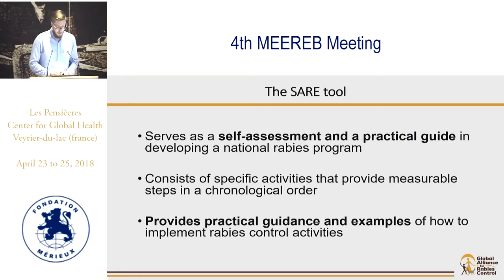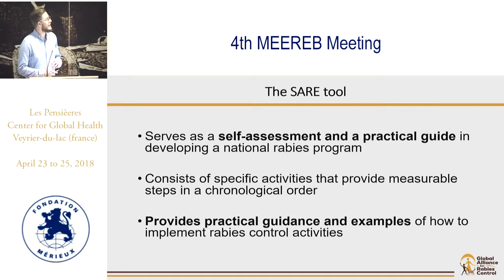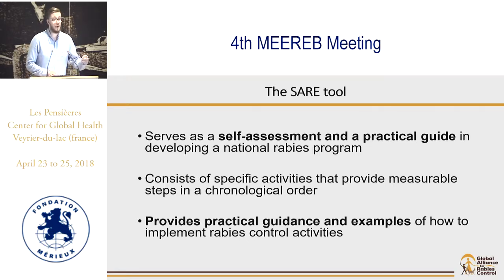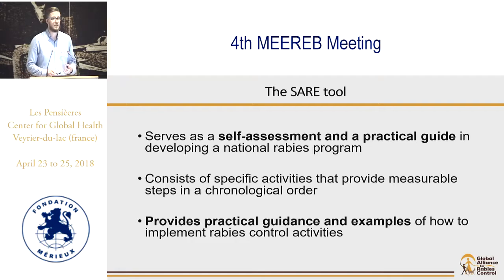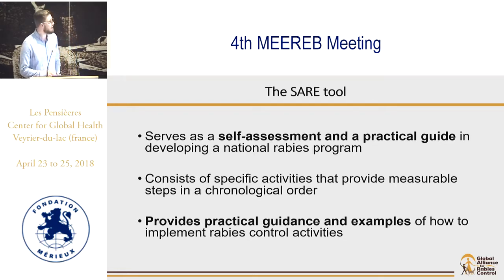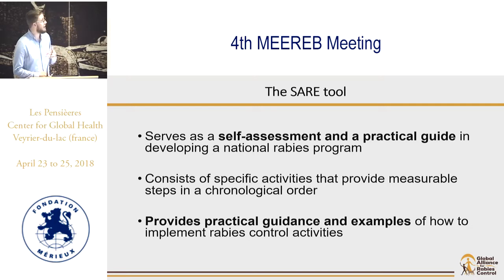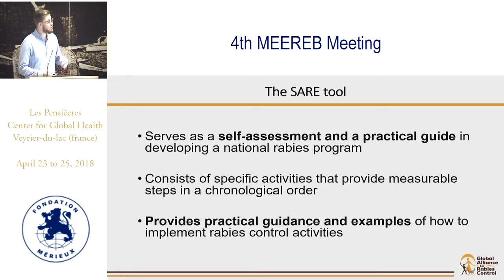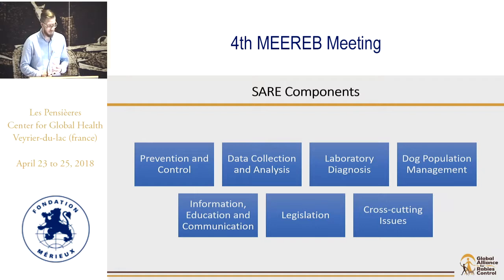The easiest way to explain what this tool is: it is a roadmap. It provides you with everything you need to know if you want to start a rabies control program, or if you have something already in place and you want to measure how far your efforts have reached and what you need to do next. The tool itself is essentially an Excel sheet — it's based on Excel and is a self-assessment and practical guide to help develop or refine a national program.